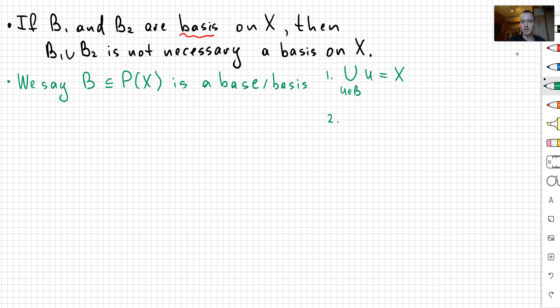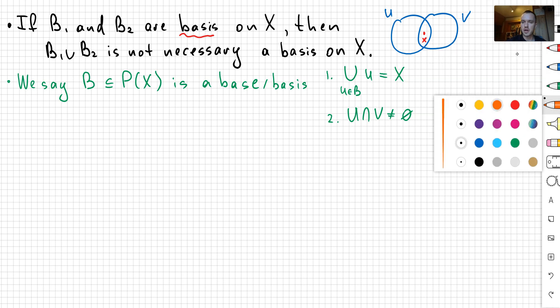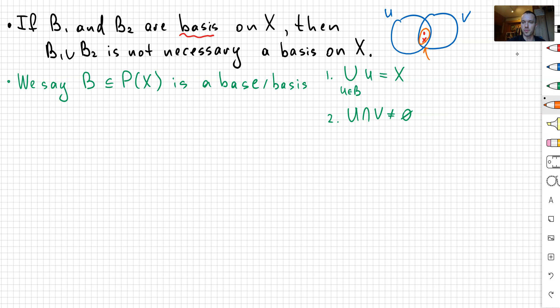And the second property, if I'm going to take some non-empty intersection of two elements of my bases, so the picture is, this is going to be my u, this is my v. If I'm going to take the intersection, I'm going to choose some element x inside. And then for that element x, I can find the third element of my base w that is going to contain x and contain within u and v.